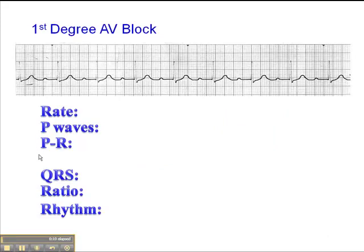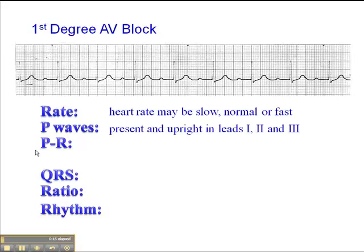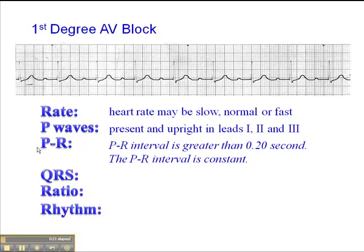In a first degree AV block, the heart rate may be slow, normal, or fast — it really may vary. P waves are typically present and upright in leads 1, 2, and 3. The hallmark key for interpreting first degree AV block is that the PR interval is greater than 0.20 second, and the PR interval is consistent throughout.